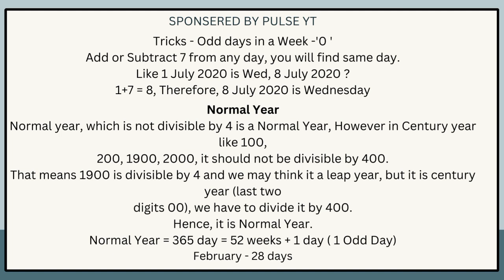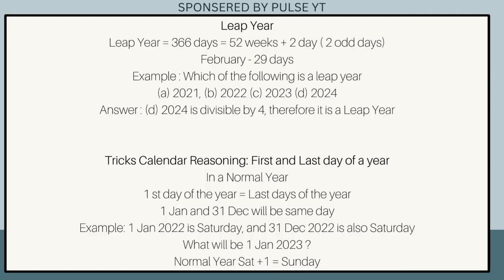A normal year is one not divisible by 4. However, for century years like 100, 200, 1900, 2000, it must be divisible by 400. So 1900 is divisible by 4 but not by 400, making it a normal year. A normal year = 365 days = 52 weeks + 1 odd day. A leap year = 366 days = 52 weeks + 2 odd days, with February having 29 days.